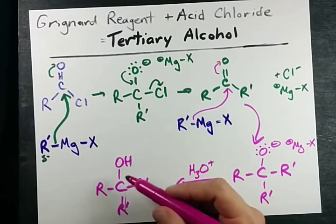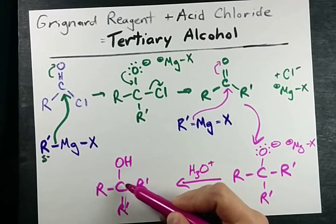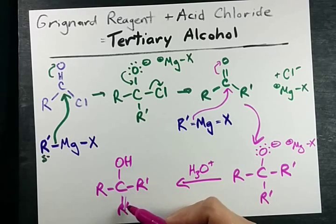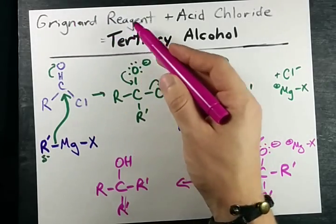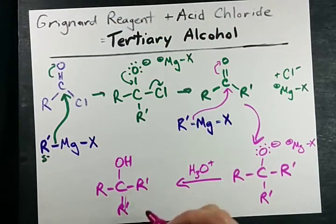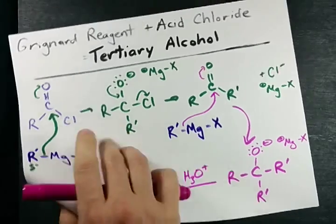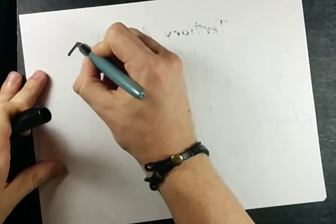If you ever need a tertiary alcohol where two of the chains are the same, I highly recommend making it with an acid chloride and the Grignard reagent. Pretty sweet — you should agree. Let me give you an example.